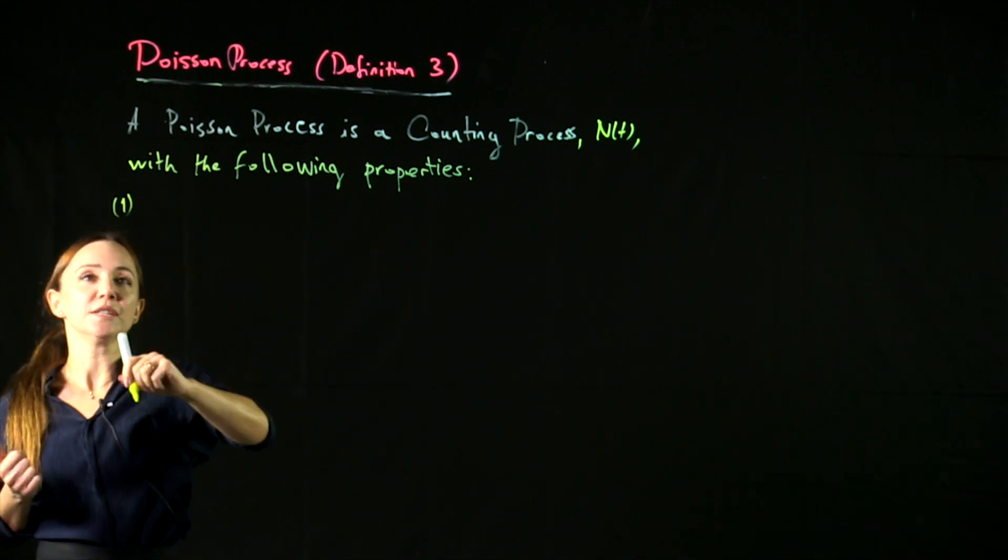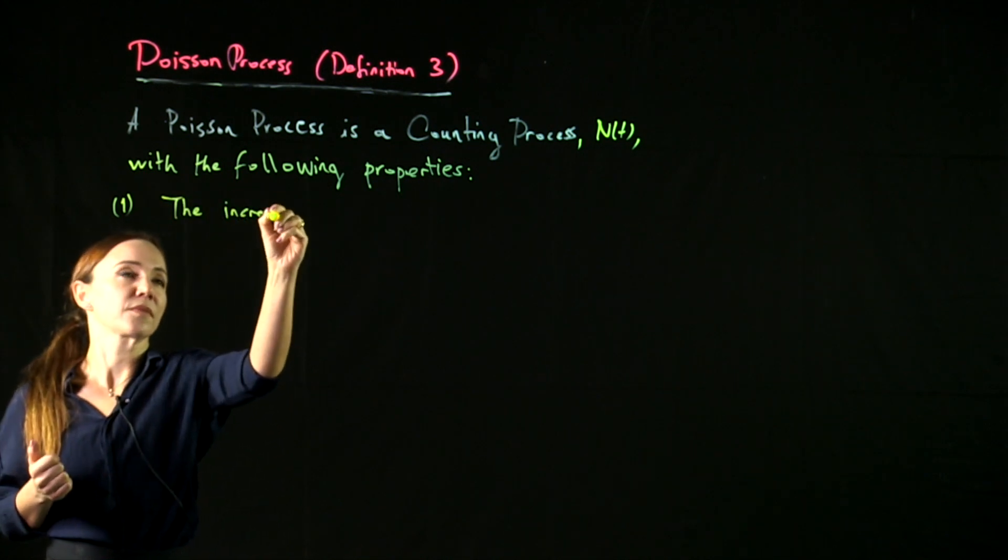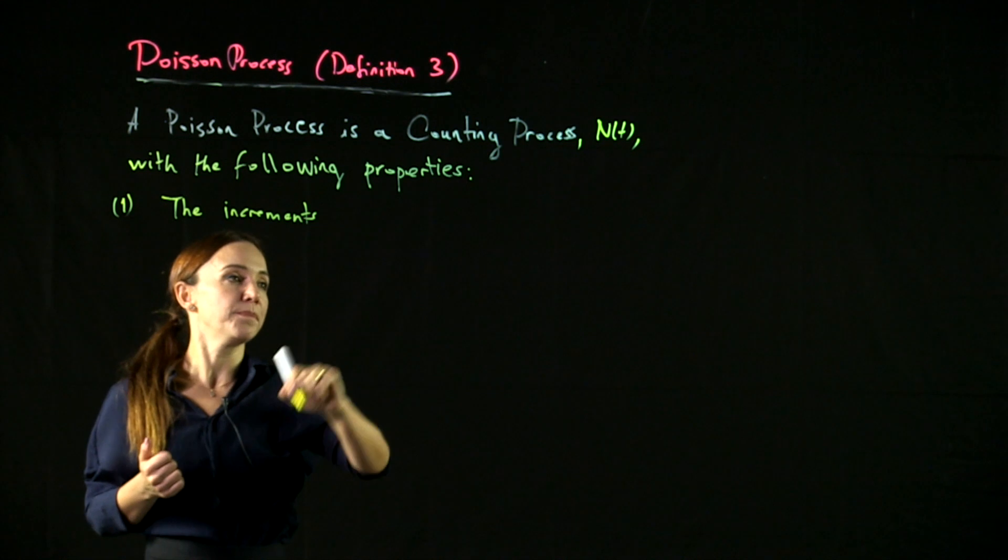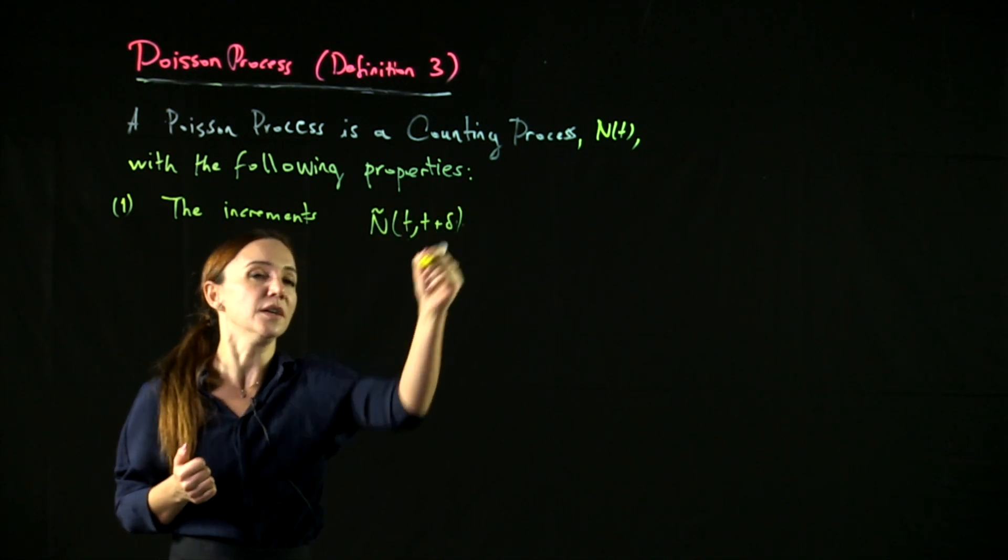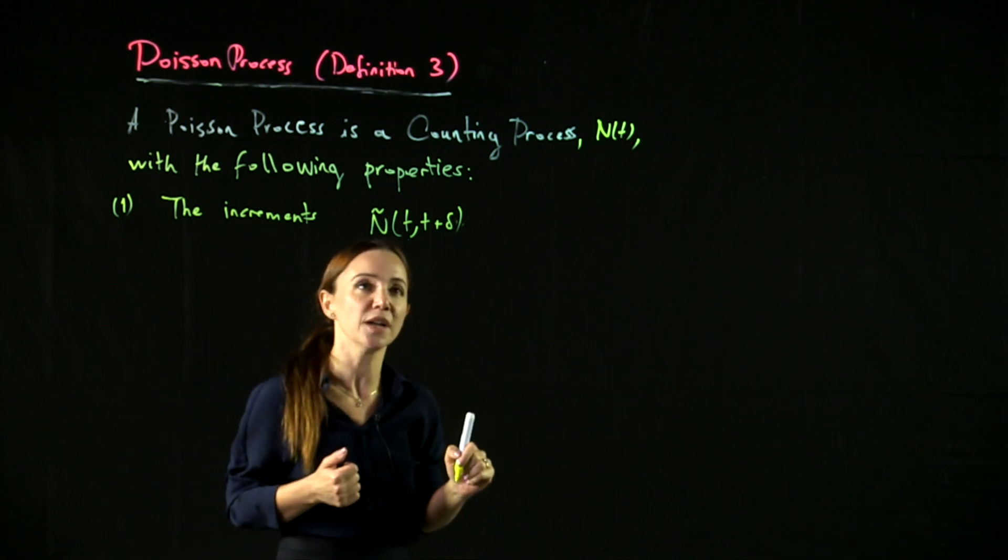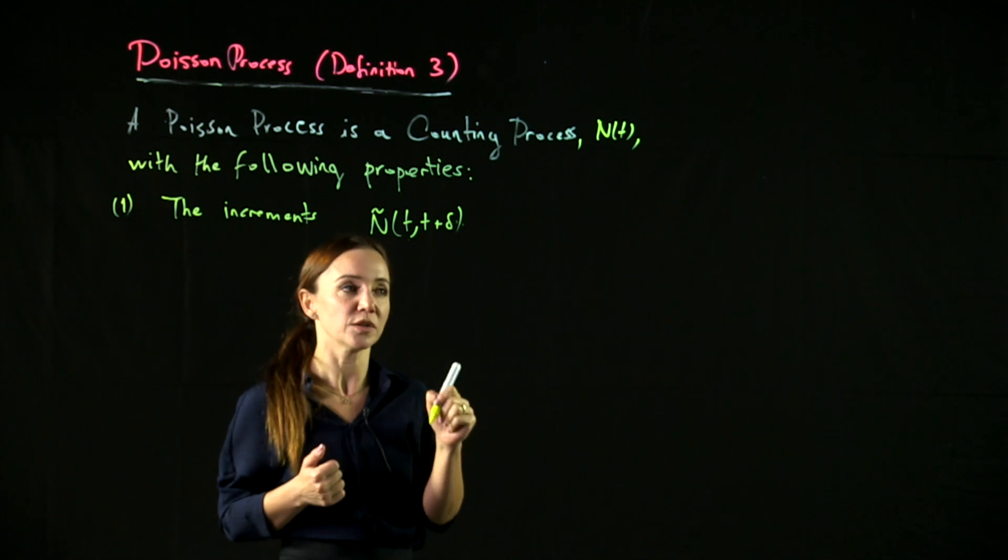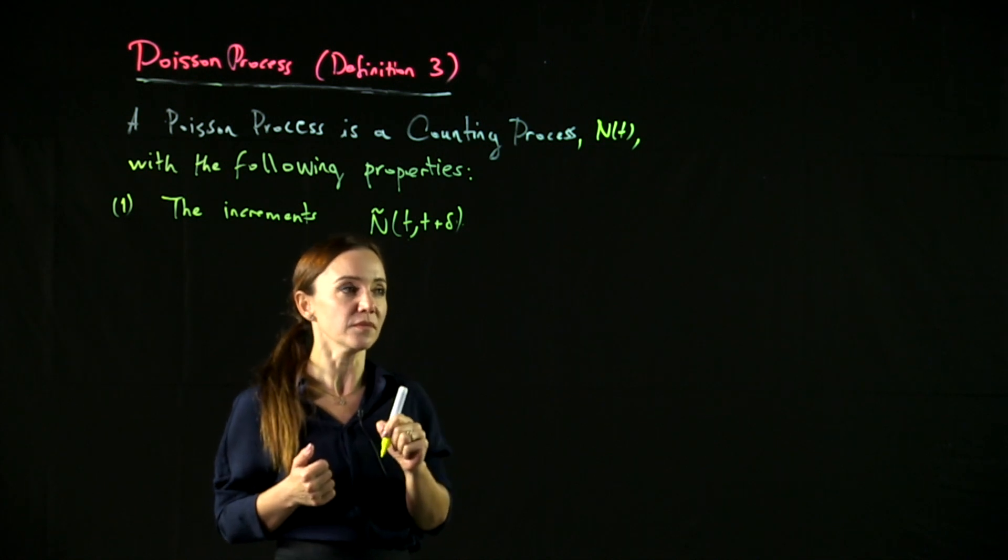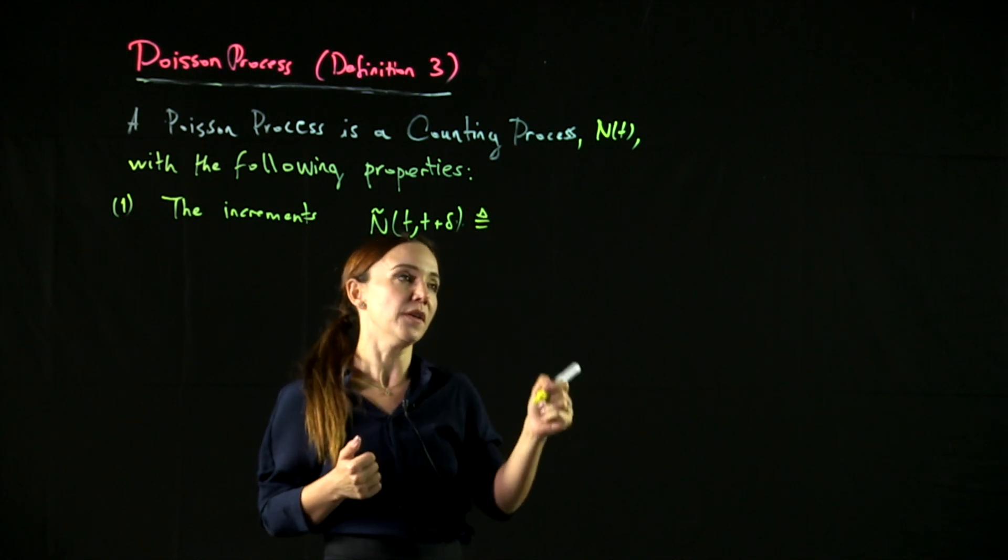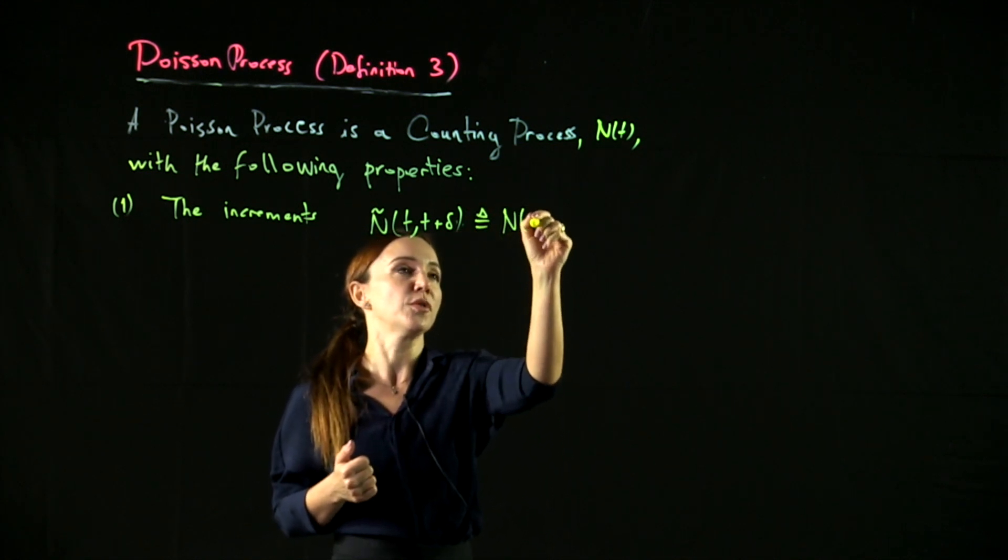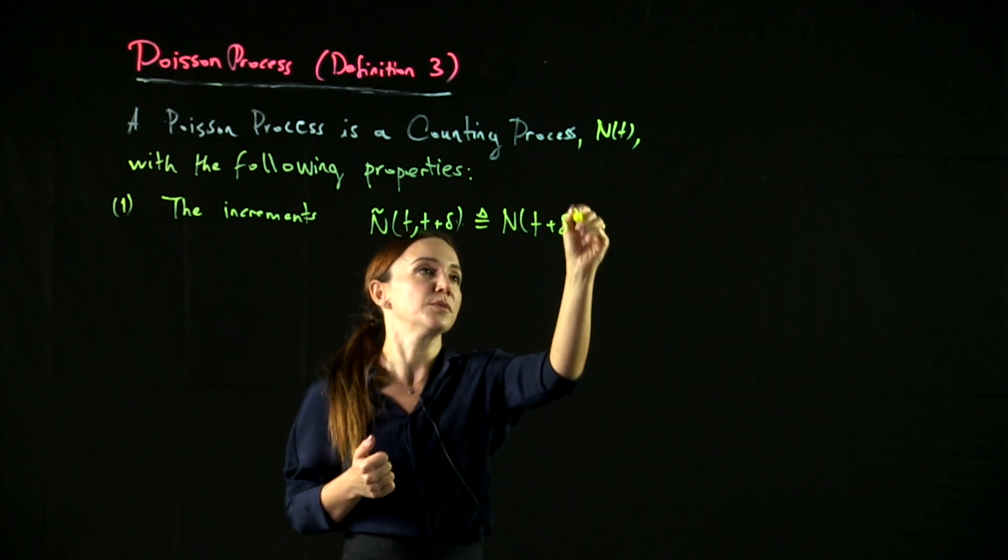The first property is that the increment process, n tilde t to t plus delta, where you can think of delta as a time interval that is very, very small and goes to zero, which is defined as the number of arrivals between t to t plus delta,